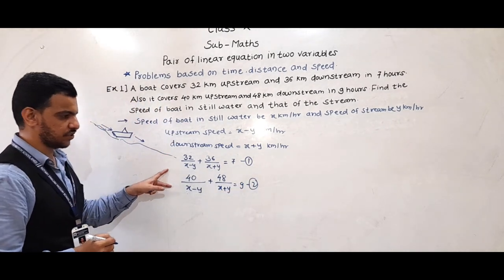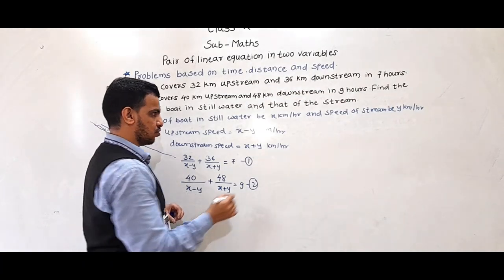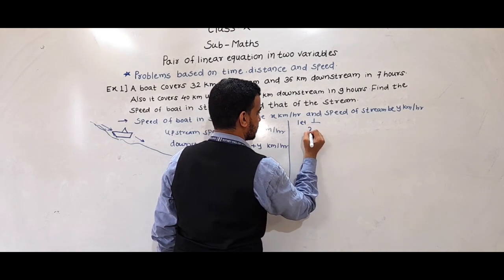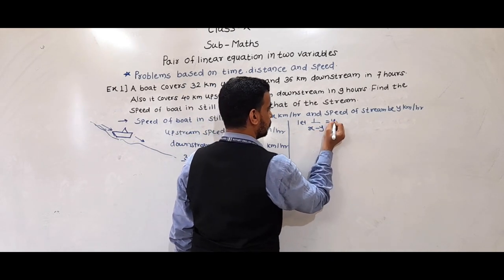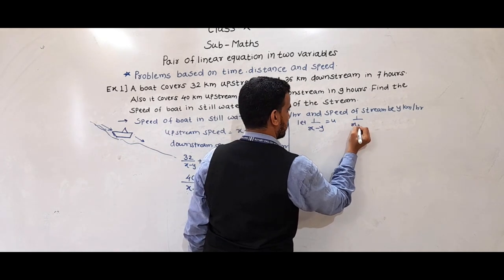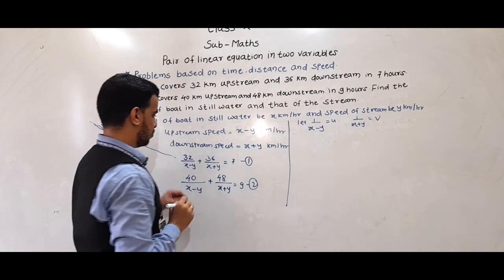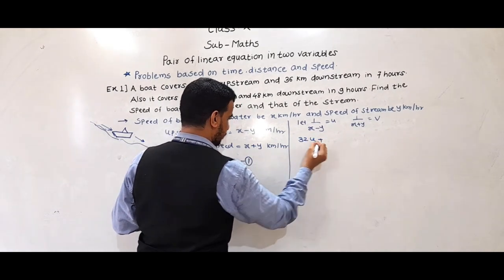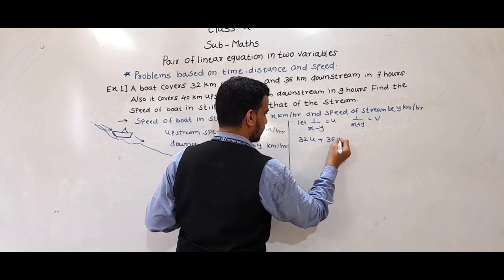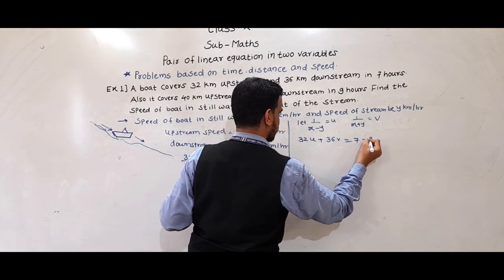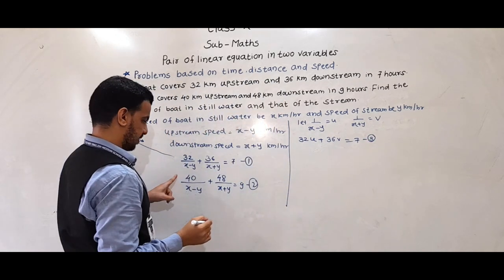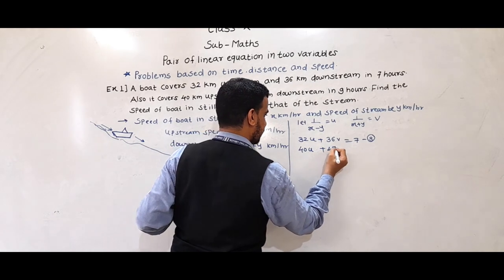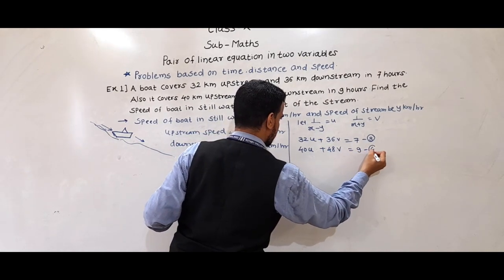Now we have to solve these two equations. We substitute: let 1 upon (x minus y) equal u, and 1 upon (x plus y) equal v. So equation 3 becomes: 32u plus 36v equals 7, and equation 4 becomes: 40u plus 48v equals 9.